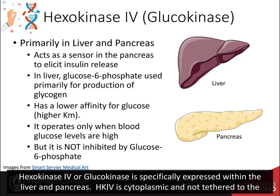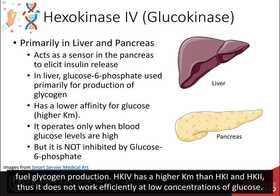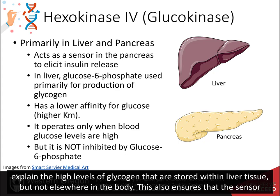Hexokinase 4, or glucokinase, is specifically expressed within the liver and pancreas. HK4 is cytoplasmic and not tethered to the mitochondria. Activity within the pancreas serves as a sensor for the release of insulin, and in the liver for the production of glucose 6-phosphate that will fuel glycogen production. HK4 has a higher Km than HK1 and HK2, thus it does not work efficiently at low concentrations of glucose. However, it is not inhibited by the product glucose 6-phosphate, so it will continue to make glucose 6-phosphate even when levels are high. This helps to explain the high levels of glycogen stored within liver tissue, and also ensures that the sensor system in the pancreas will accurately read blood glucose levels.